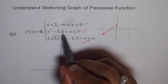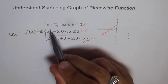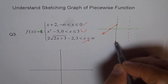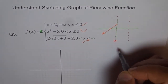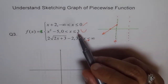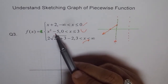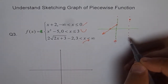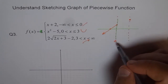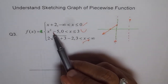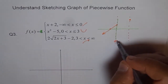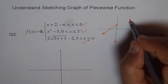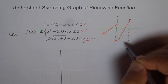Now for the parabola, put x equals 0 into x squared minus 5: 0 squared minus 5 gives minus 5. So we get the point (0, −5), but this point is not included — make a hole here. We go up to x equals 3: 3 squared is 9, 9 minus 5 is 4, so at x equals 3 the value is 4, and this endpoint is included. For x equals 1: 1 squared minus 5 is minus 4. For x equals 2: 4 minus 5 is minus 1. We join these points to get our parabola segment.